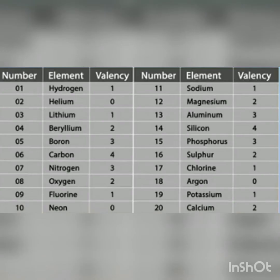We also need to remember valencies alongside symbols when writing chemical formulas. The valencies are: hydrogen 1, helium 0, lithium 1, beryllium 2, boron 3, carbon 4, nitrogen 3, oxygen 2, fluorine 1, neon 0, sodium 1, magnesium 2, aluminium 3, silicon 4, phosphorus 3, sulfur 2, chlorine 1, argon 0, potassium 1, and calcium 2. These valencies are essential for writing chemical formulas.